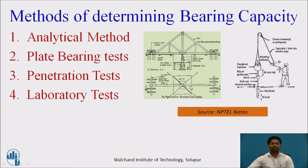The first method is the analytical method. Within the analytical method, there are five sub-methods to determine SBC of soil: first is Terzaghi's bearing capacity, second is Meyerhof's equation, third is Vesic's equation, fourth is the IS method, and the last is Tanks equation.